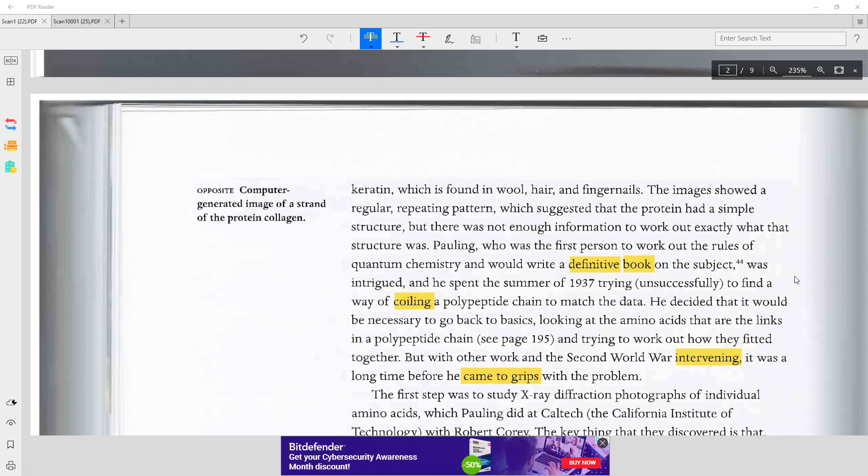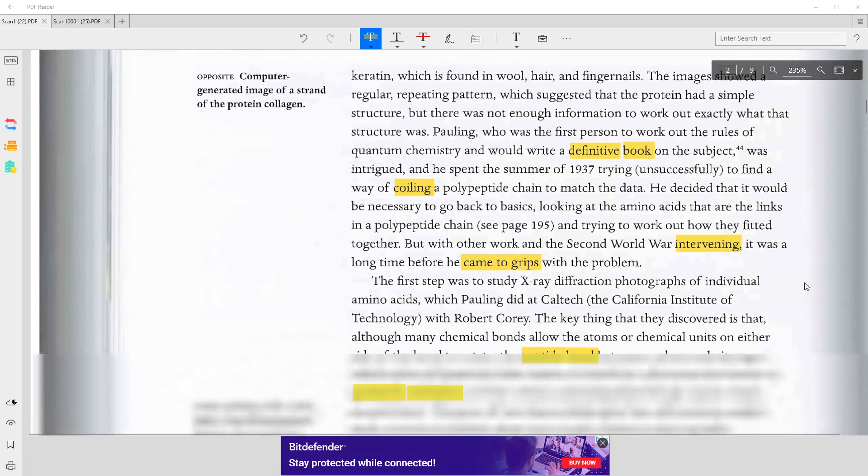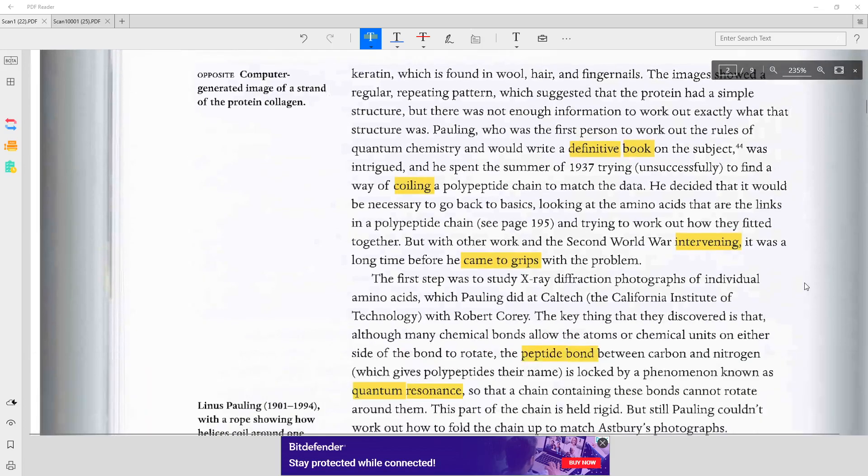Pauling, who was the first person to work out the rules of quantum chemistry and would write a definitive book on the subject, was intrigued.